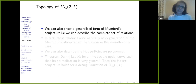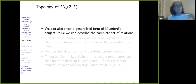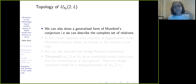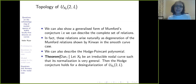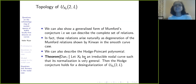We can also show a generalized form of Mumford's conjecture — i.e., we can describe the complete set of relations. And we can describe the Hodge polynomial. Finally, I had said the Hodge conjecture is known for a very general smooth curve by Balaji-King-Newstead. What we do is use their result and say: if we let X₀ be an irreducible nodal curve such that its normalization is very general, then the Hodge conjecture holds for a de-singularization of U_{X₀,L}.